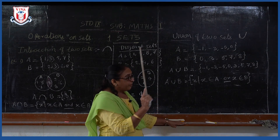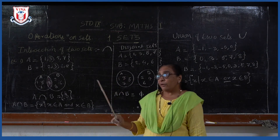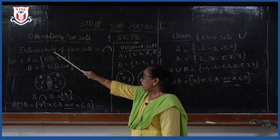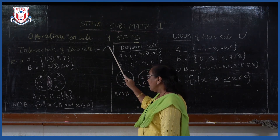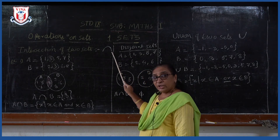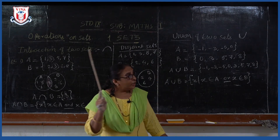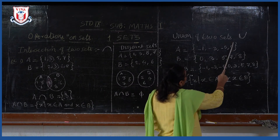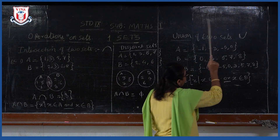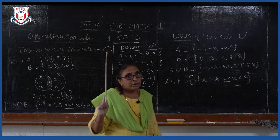In intersection, the element should be present in A as well as B. But in the union set, the element should be present either in A or in B. That is why 'or' is written. You have to keep in mind these operations — the symbol for intersection and the symbol for union of two sets.